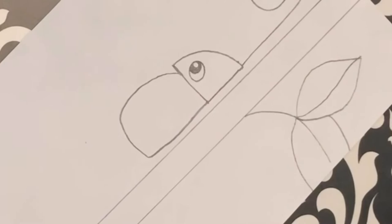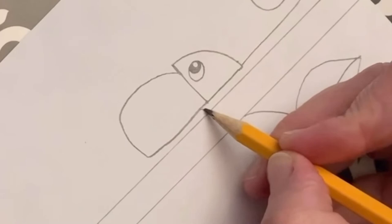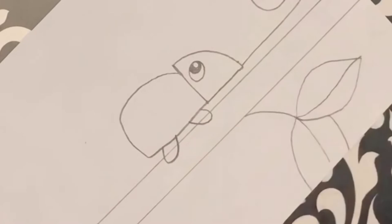Now his little legs. Well, those are just little U's off to the side. So one to the right and another to the left. So we've got his body kind of coming together.